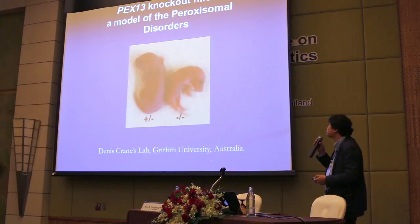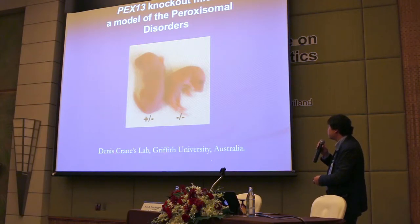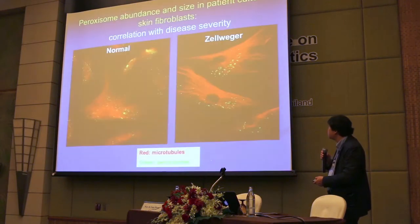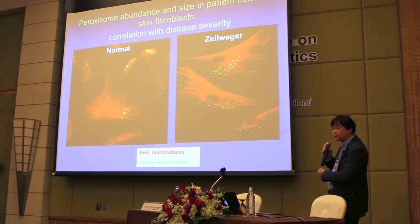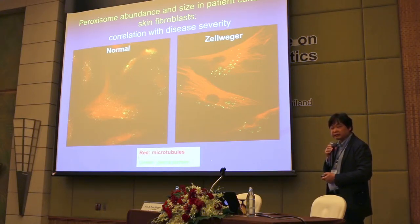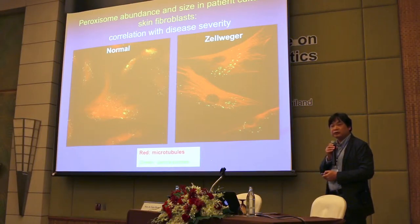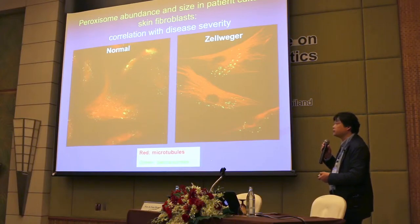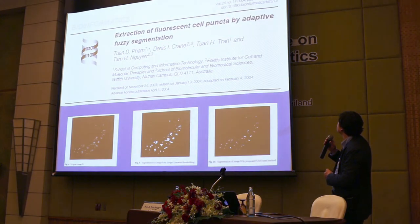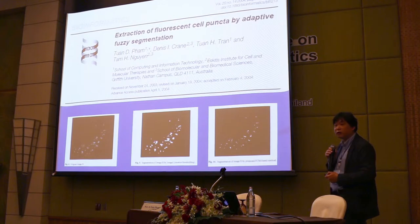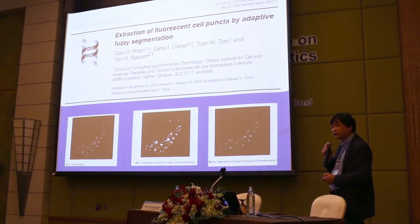One of our earliest collaborations in biometrics with cell biology was with Professor Danny Strain from Griffith University in Australia. He was interested in paroxysm disorders. He had images — one normal and one showing a syndrome — and tried to use ImageJ from NIH, but could not find satisfactory results. Researchers were manually counting the number of spots, interested in the number and distribution. We got involved and developed an automatic technique using fuzzy c-means clustering analysis, publishing the paper around 2004.